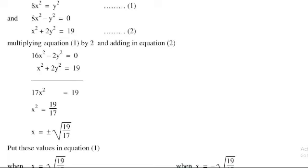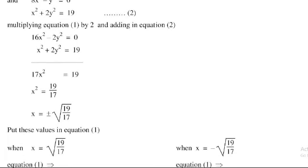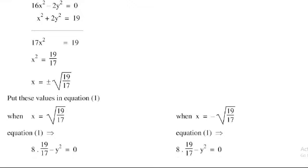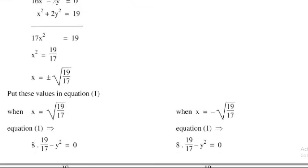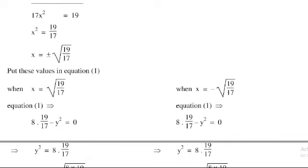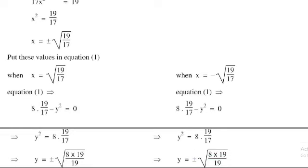Substituting x = √(19/17) into equation 1: 8 × (19/17) − y² = 0. Therefore y² = 8 × (19/17), which equals 8 × 19/17.